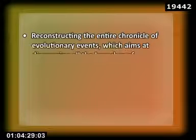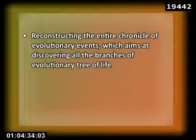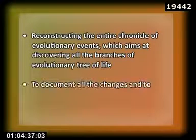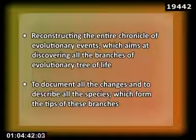A good number of authors still consider taxonomy to be the more inclusive one, which leads recent authors to prefer the term systematics in their works. Modern approach to systematics aims at reconstructing the entire chronicle of evolutionary events, which ultimately aims at discovering all the branches of the evolutionary tree of life, and to document all the changes and describe all the species which form the tips of all these branches.